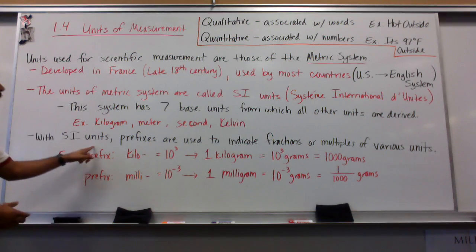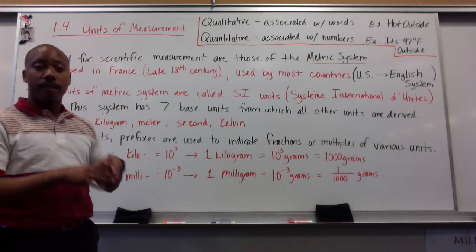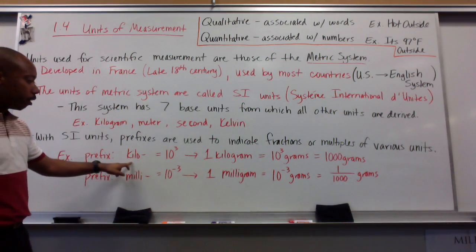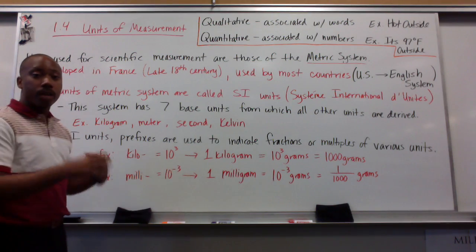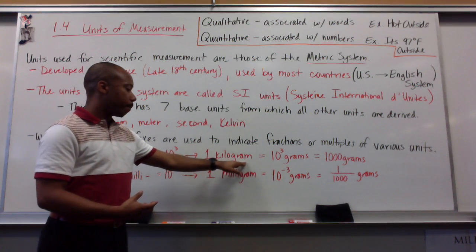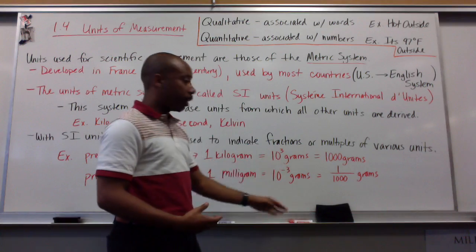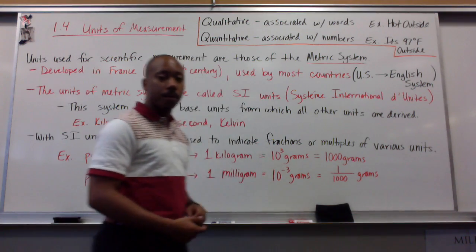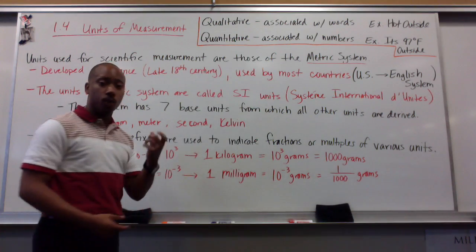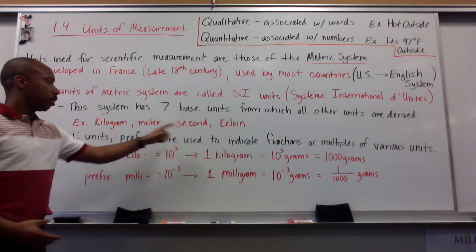Now, with SI units, prefixes are used to indicate fractions or multiples of various units. For example, the prefix kilo means ten to the third power of whatever base unit we're talking about. For example, if I said one kilogram, this is ten to the third power of grams. Ten to the third can also be expressed as one thousand grams. So, one kilogram is one thousand grams. Essentially, kilo means one thousand.